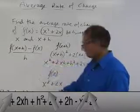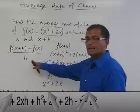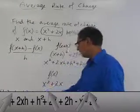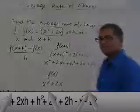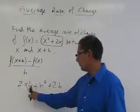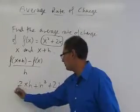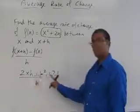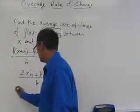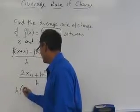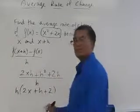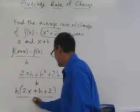And remember, we haven't divided by h yet. We still have to divide by h. So we have 2xh plus h squared plus 2h, all divided by h. And so an h can factor out from the top here. So we have an h. We factor out an h, and we get 2x plus h plus 2. We factor out an h, divided by h.